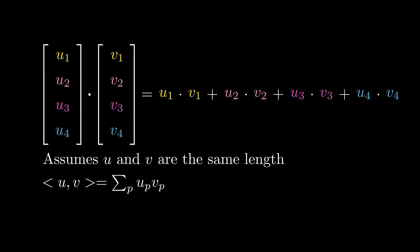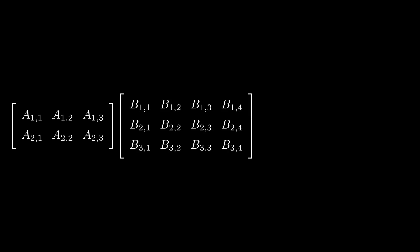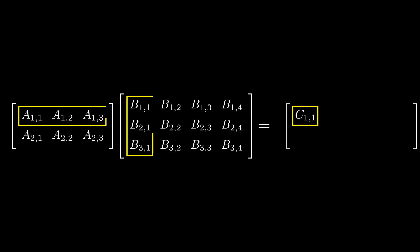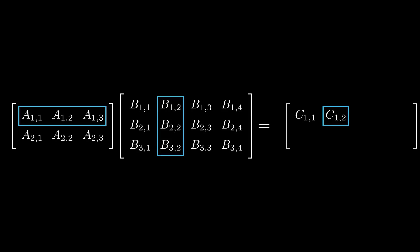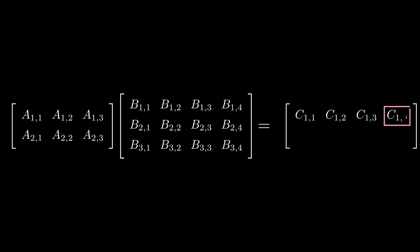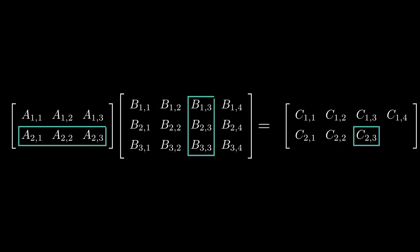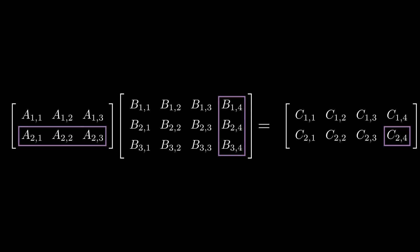Now that we've defined a dot product, why do we care? Consider two matrices. I can only compute their product if the number of columns in the first matrix equals the number of rows in the second matrix. In that case, I create a product matrix by taking the corresponding row from the first matrix, the corresponding column from the second matrix, and dot producting those two vectors together. The output is stored as an element in the output matrix, and this restriction on matching lengths is exactly why the column and row counts must agree.